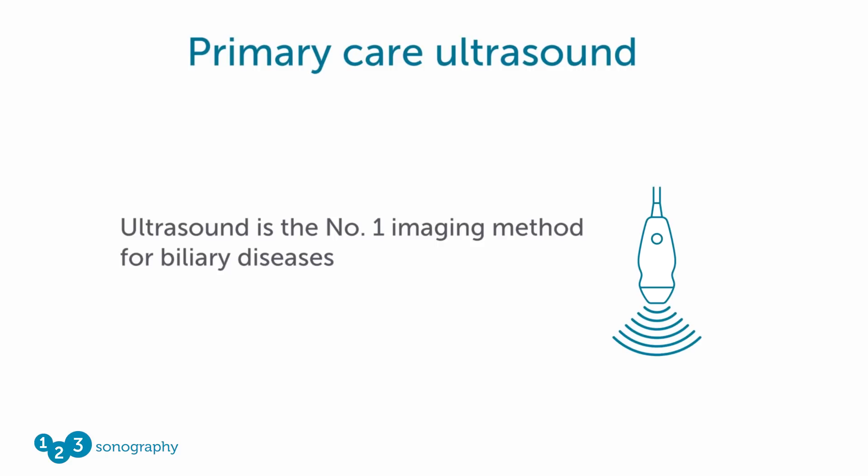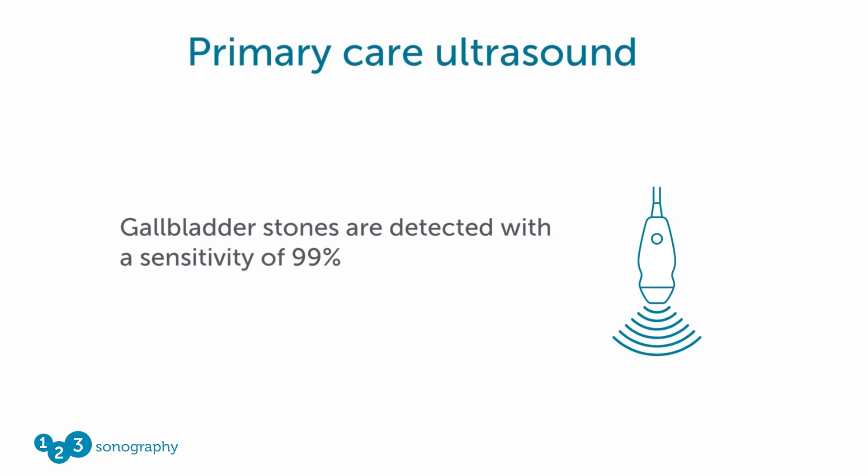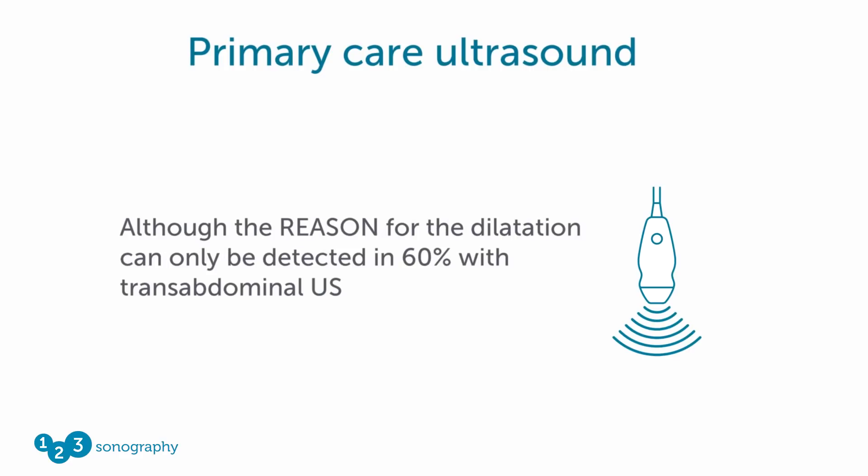For the detection of gallbladder stones, ultrasound has a very high sensitivity — it detects approximately 99% of all gallstones. This is specific to stones in the gallbladder, not in the bile duct system. The dilatation of the bile duct is very common when there is a stone in the biliary system, but as part of the biliary tree runs behind the duodenum, it cannot always be covered with transabdominal ultrasound. However, it can be detected by identifying a dilatation of the common bile duct.